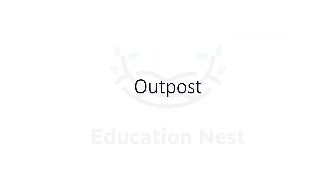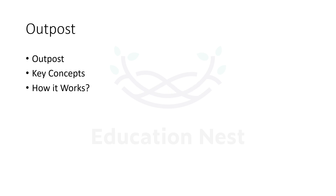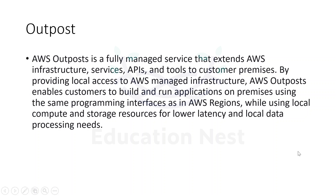The next topic is Outpost. When we talk about Outpost, it is basically a service - a physical thing. It is a physical service which is delivered to us by AWS, so we have to order it. Outpost is a fully managed service that will extend your AWS infrastructure, services, APIs, and tools to your premises.